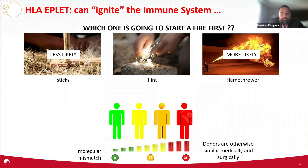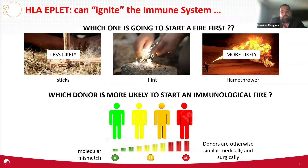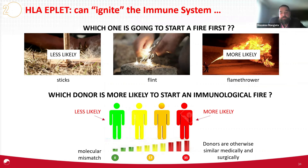Now let's assume I can give you four donors that are otherwise similarly medical and surgical — you could cover your eyes and point and that's the donor you would choose. But I'm going to add the information that they have a different degree of mismatch — one is very low or no mismatch and one is high mismatch. Which of these four donors is most likely to start an immunological fire? I think we'd all agree the one on the left is less likely and the one on the right is more likely. This is how you frame the importance of eplet mismatch and how you discern between donors.